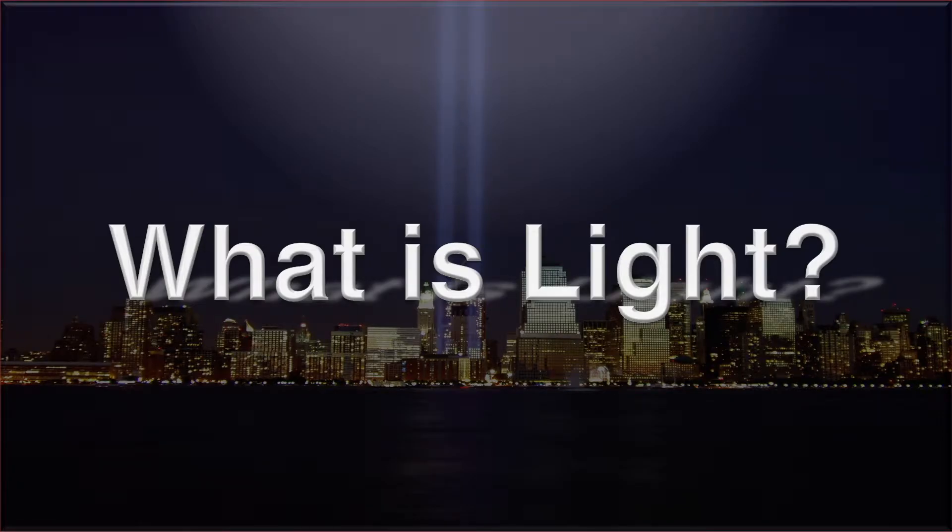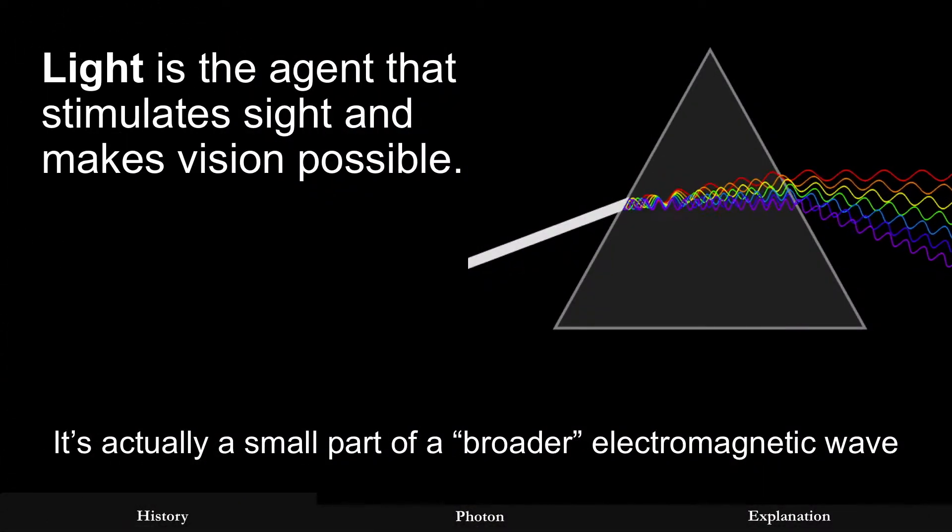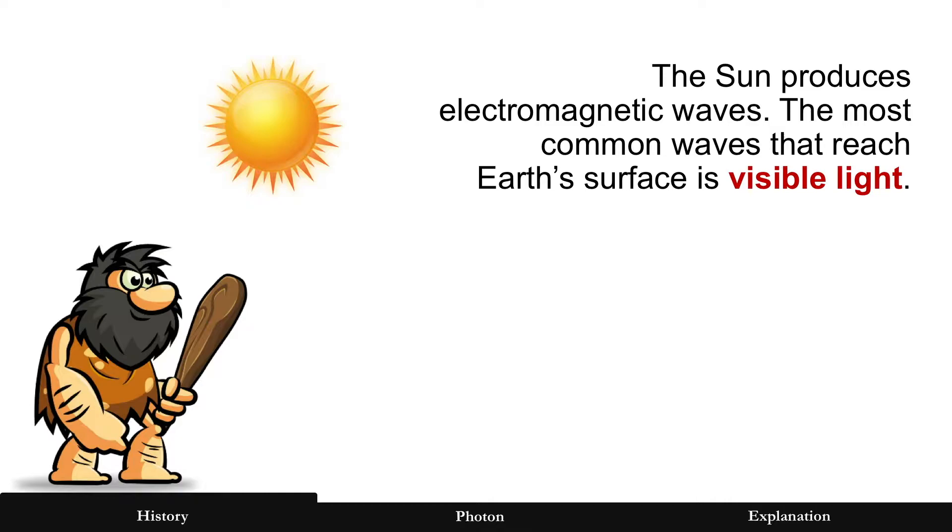What is light? Light is the agent that allows vision to happen for us humans, but it's actually part of a much broader thing called the electromagnetic wave, and the Sun produces electromagnetic waves.